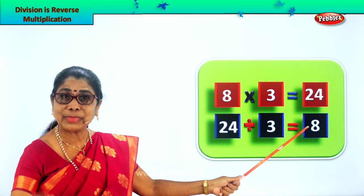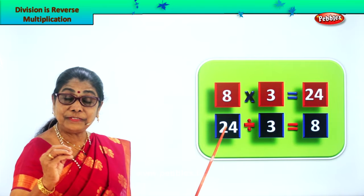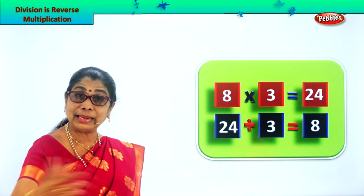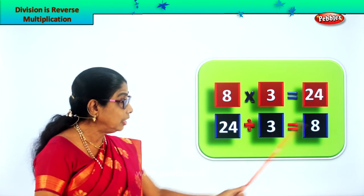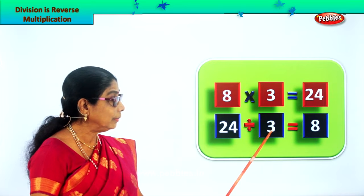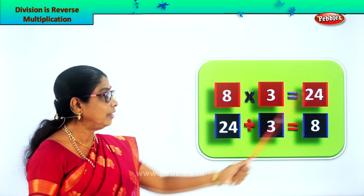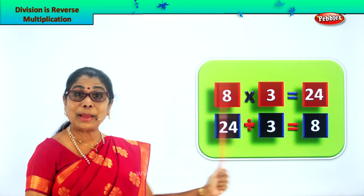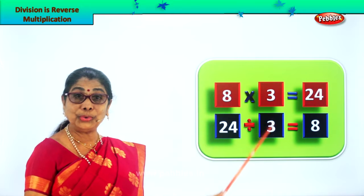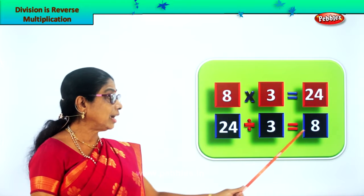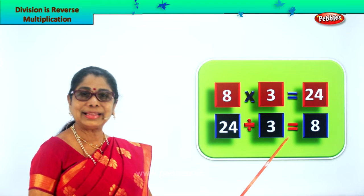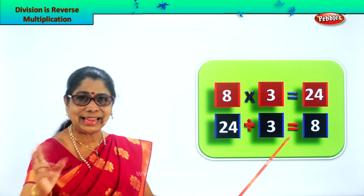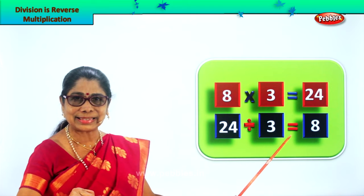What are we learning? Division is reverse multiplication. Let's check our answer. Eight into three — eight threes are 24. Multiplication tables you should know to check your answer. It's a very interesting exercise, isn't it? Let's take another sum.